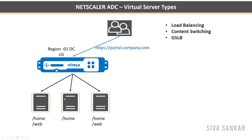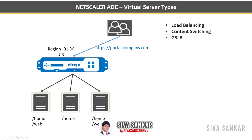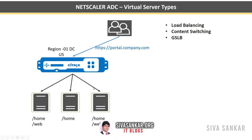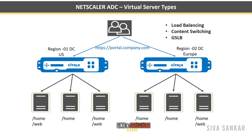Now servers one and two each have 15 sessions. When server three comes back up, with round robin the next request goes 16, 16, then 1 — which is not fair because server three has no load. What least connection will do is send the next requests to server three until the load is balanced across all servers. This is called least connection. Now let's discuss GSLB — Global Server Load Balancing.